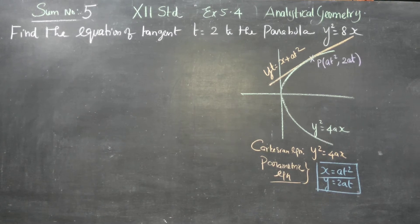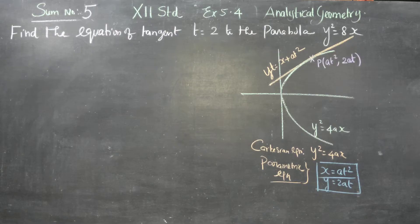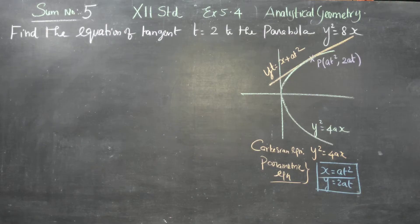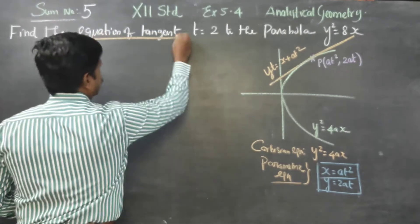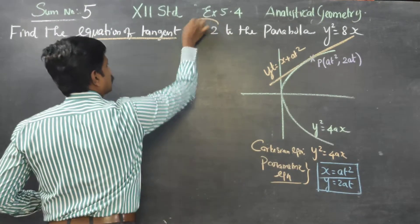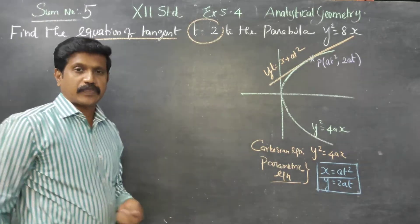Dear 12th standard students, in sum number 5, exercise 5.4, an integral geometry: find the equation of the tangent at t equal to 2 to the parabola y square is equal to 8x.